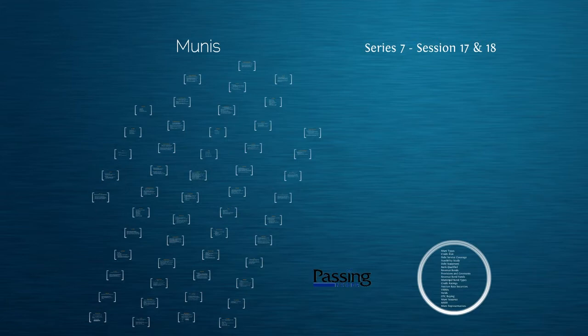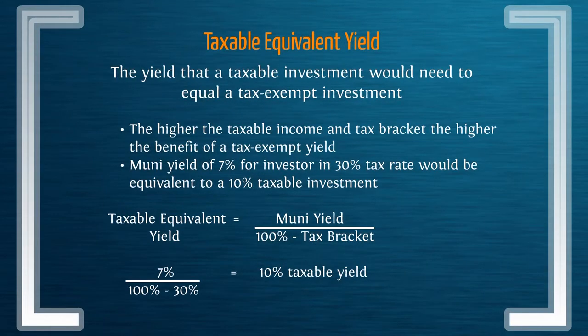There was a lot to cover in this area. One of the key things we saw with Munis is that, with very few exceptions, the interest income on these bonds is tax exempt. So one thing we might want to know is what a taxable investment would have to yield to be equivalent to our tax exempt Muni bond. We have a calculation for that called the taxable equivalent yield.